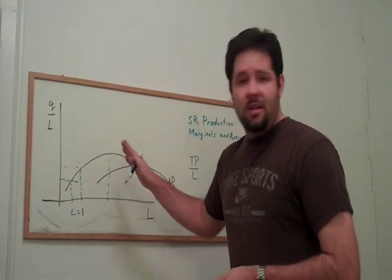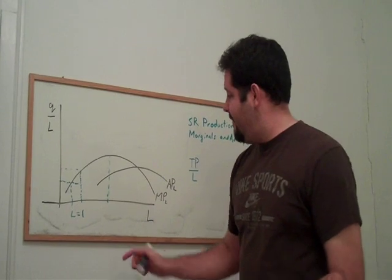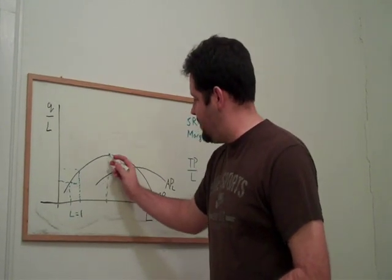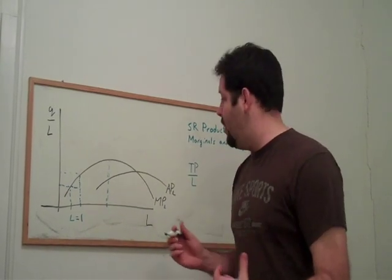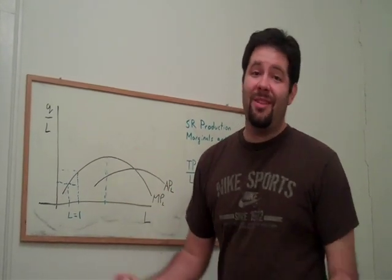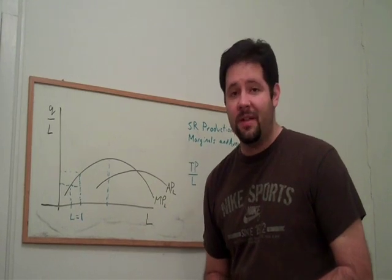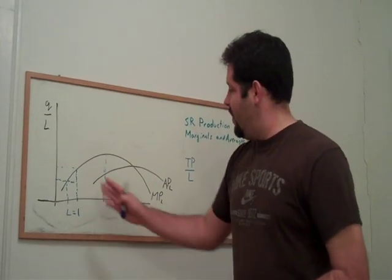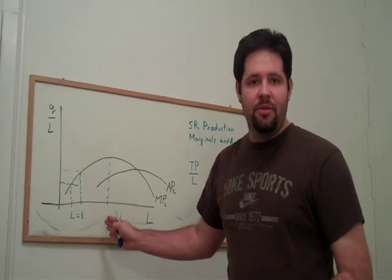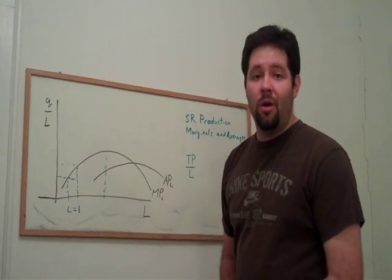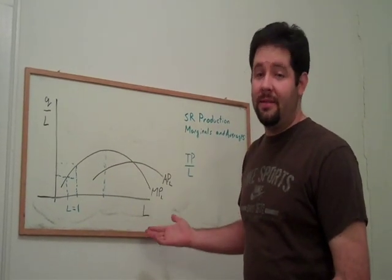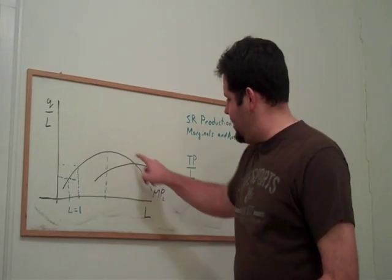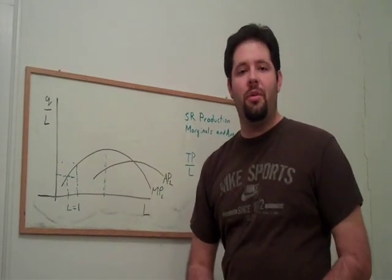Now, the reason we get to this point is because we have two competing effects. One effect is the specialization. More workers can specialize and utilize the capital very well. But the other effect is that there's only so much capital. It's a fixed input. And as we increase the number of laborers, we have less capital per worker. Therefore, the marginal productivity of adding workers declines.